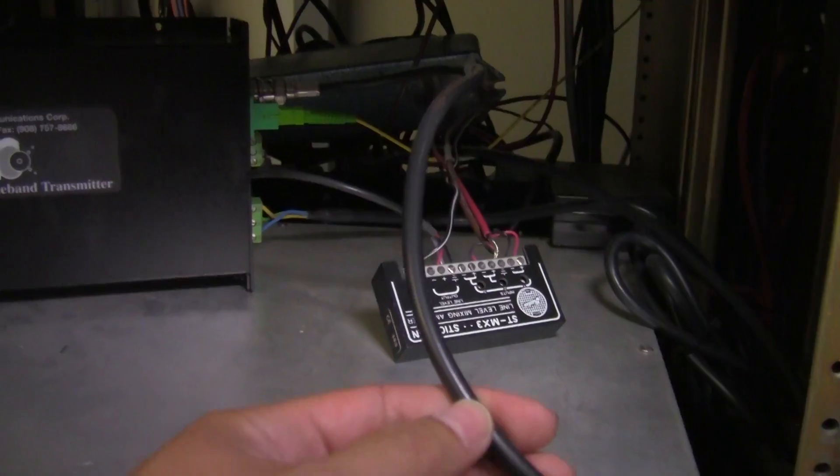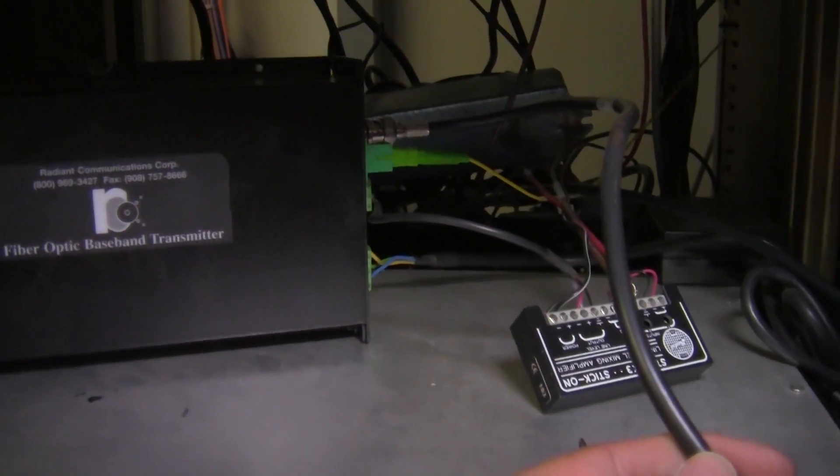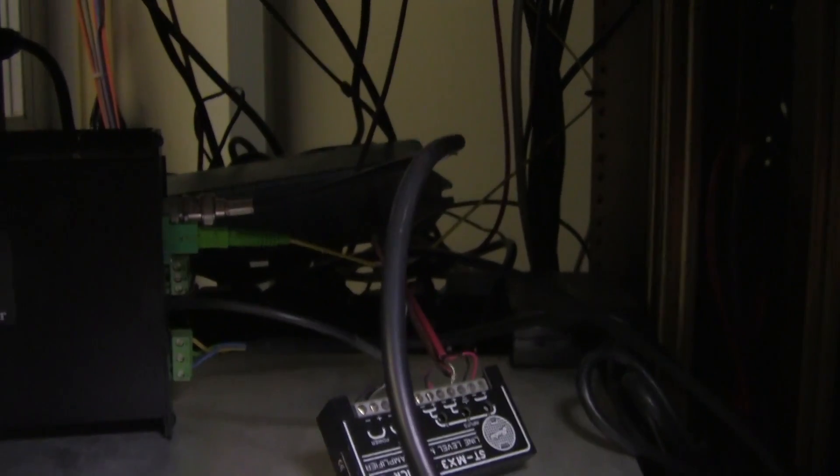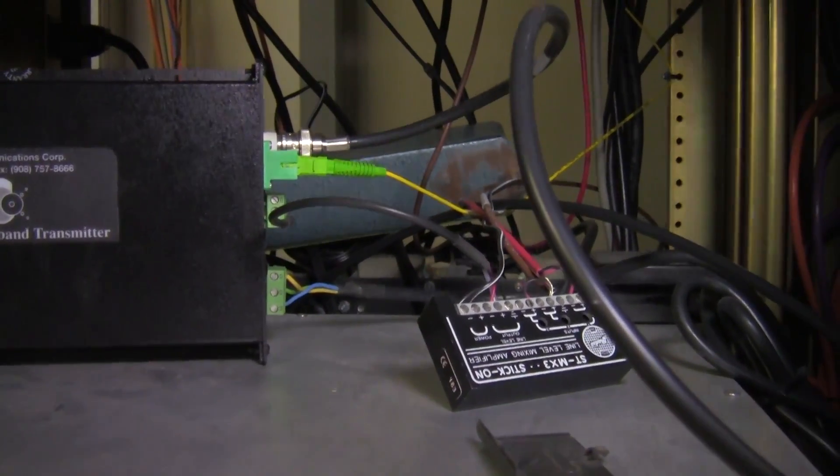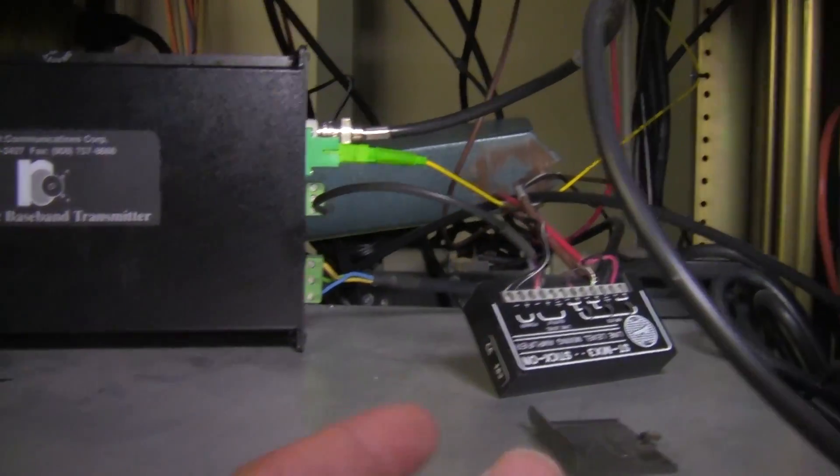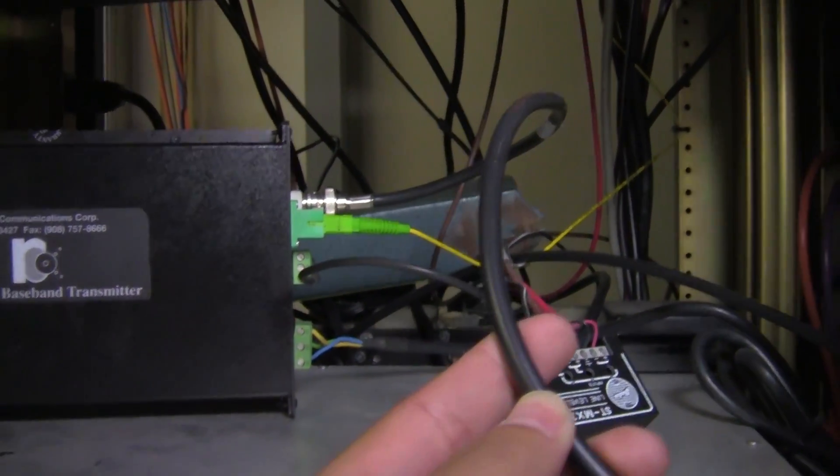So ultimately everything ends up going to this box here which is a transmitter. It converts the video and the audio that's coming from this BNC cable as well as that little box that has the audio spliced into it.